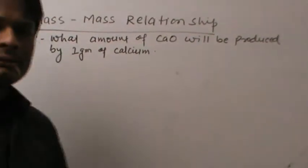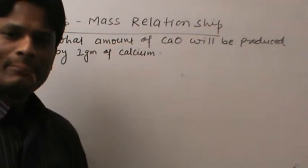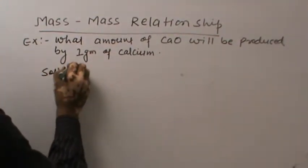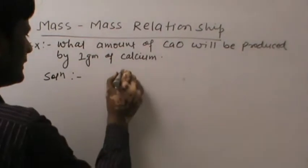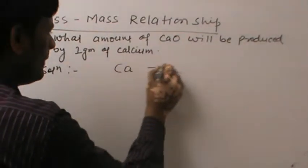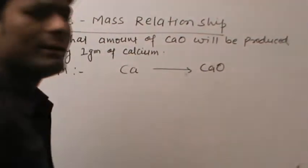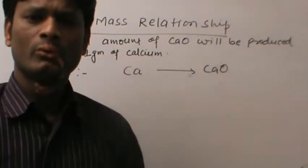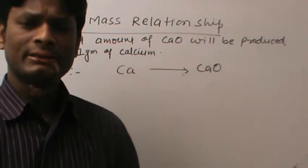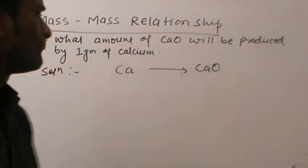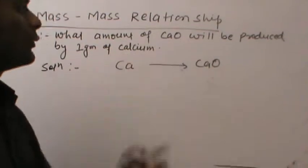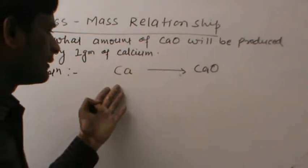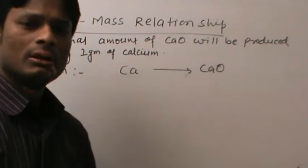First, we have to write the chemical equations. That means, Ca will give CaO when it reacts with oxygen. Actually, in the question, there is no information regarding the oxygen. We have to just calculate the amount of CaO with the help of Ca. So we can write these equations like Ca equals to CaO.